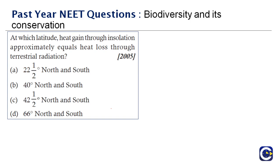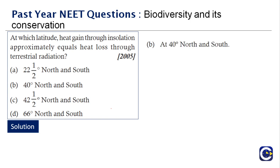Next question asked in 2005: at which latitude does heat gain through insolation approximately equal heat loss through terrestrial radiation? This is a direct question. The right answer is option B — 40 degrees north and south. At 40 degrees north and south latitude, heat gain through insolation approximately equals heat loss through terrestrial radiation.